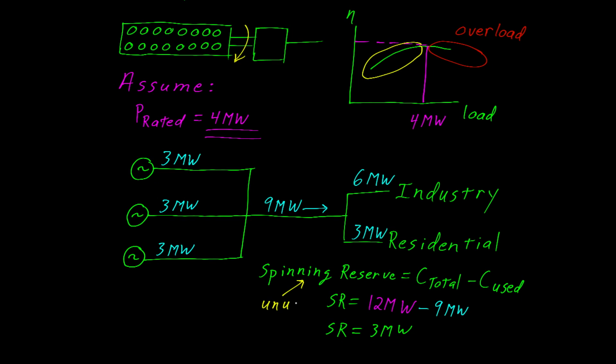It's important that you have some spinning reserve to make up for changes in the load. For example, if industry suddenly turned on a few large motors, and it jumped 8 megawatts instead of 6, we would still have a spinning reserve of 1 megawatt. And so the system maintains that balance, where the power produced by the generators is exactly equal to the power consumed by the town.